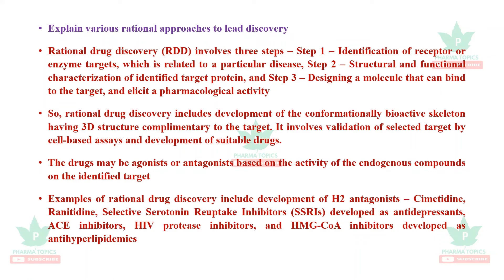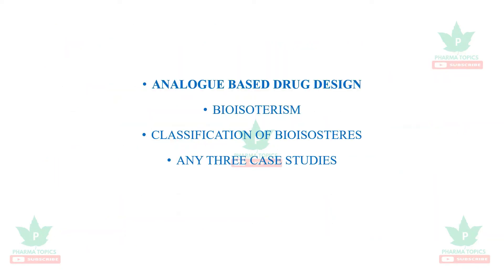The drugs developed may be agonists or antagonists based on their activity relative to endogenous compounds on the identified target. Examples of rational drug discovery include development of H2 antagonists cimetidine and ranitidine, selective serotonin reuptake inhibitors (SSRIs) developed as antidepressants, HIV protease inhibitors, and HMG-CoA inhibitors (statins) developed as antihyperlipidemics.